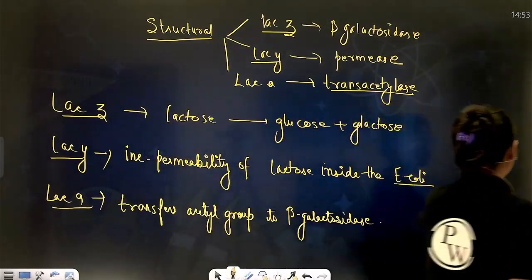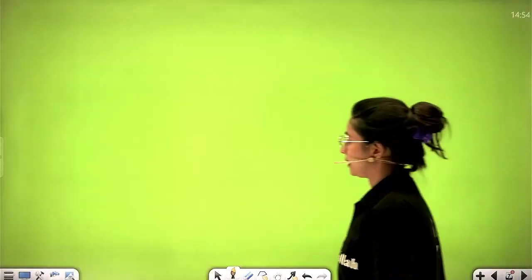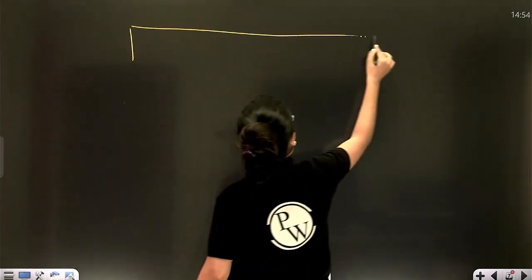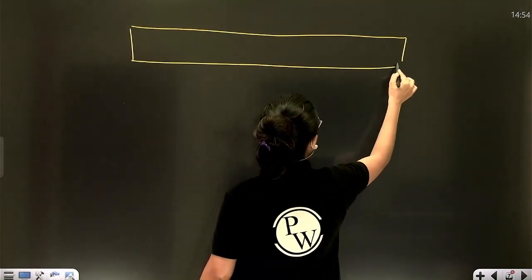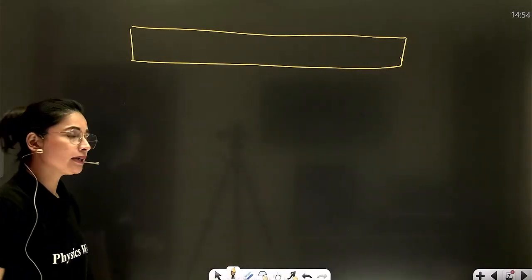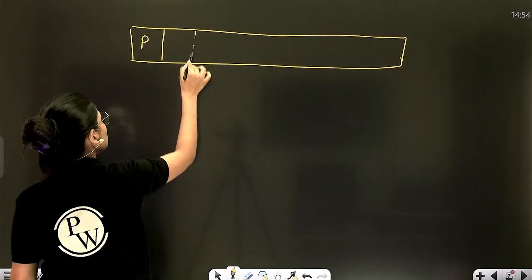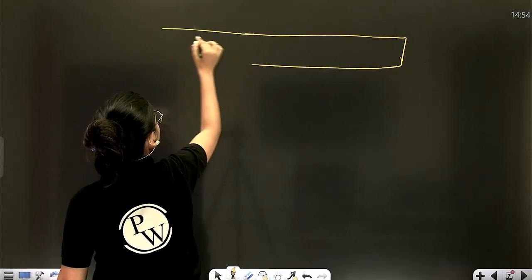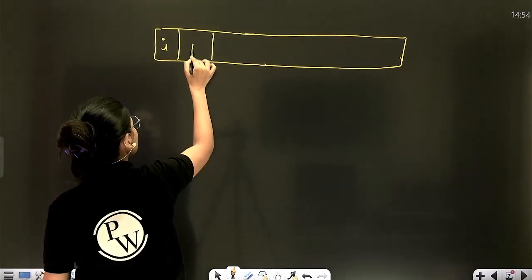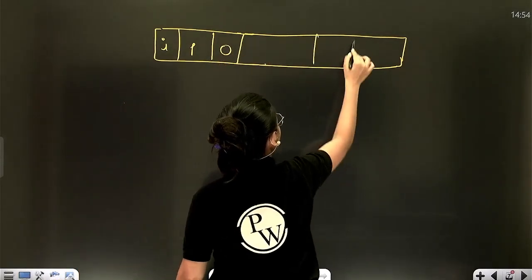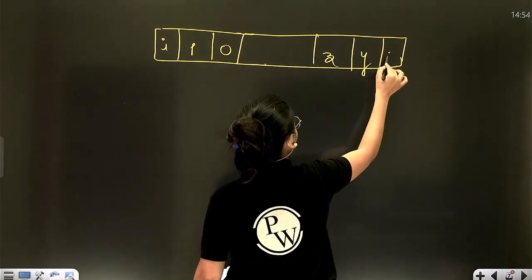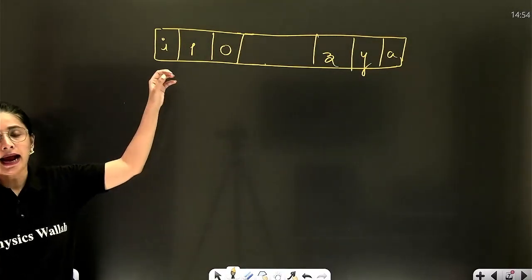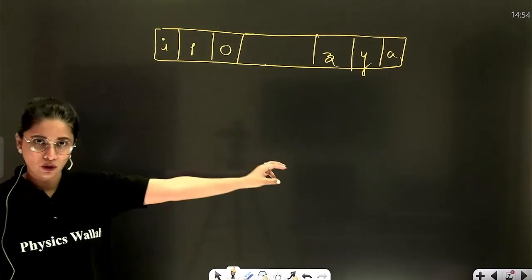Now let's try to see the diagrammatic representation of the lac operon. Let me add a page and then we will check out the diagrammatic representation. Basically it is polycystronic — this is the DNA having the inhibitor gene, promoter gene, operator gene, and three structural genes Z, Y, and A. So this whole DNA represented by this group of genes is known as the operon, which is going to control the lactose metabolism.